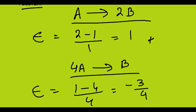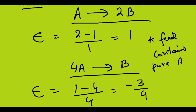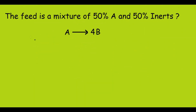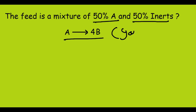In both these simple cases, one assumption is very important: the feed contains only pure A. Only in this case can we easily calculate epsilon like this. But what if the feed is a mixture — for example, 50% A and 50% inert — and the reaction is A giving 4B, and it is a gas phase reaction?